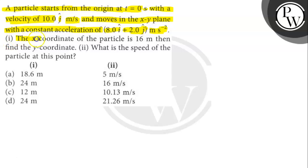Question a says, the x coordinate of the particle is 16 meters, then find the y coordinate. And question 2 says, what is the speed of the particle at this point? Let's find out.